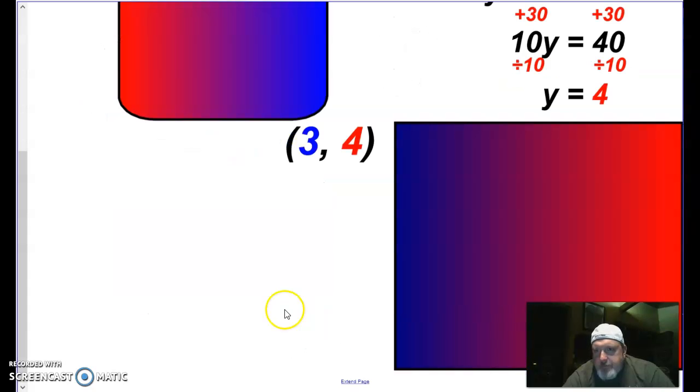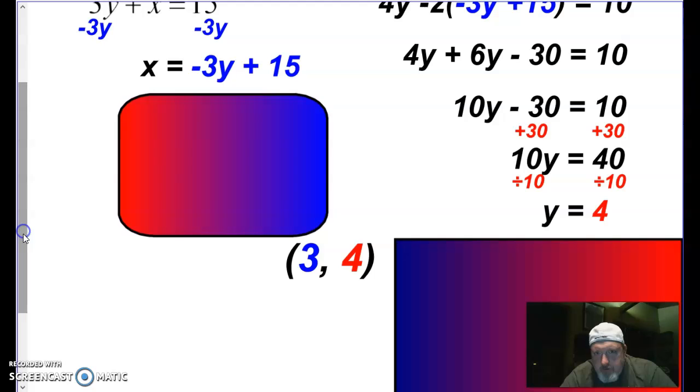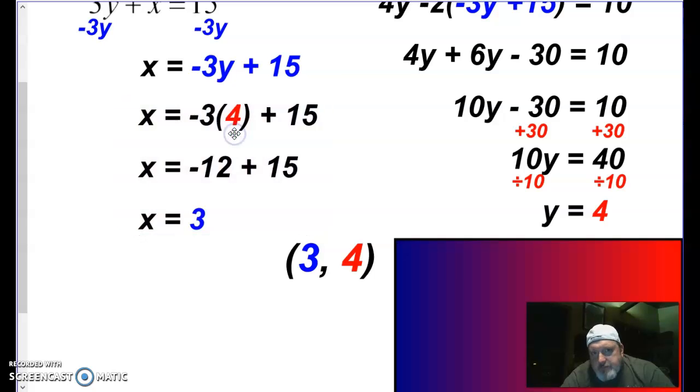Now that I know that y is 4, I am going to plug that back in to the other equation. So now that I have y equals 4, I'm going to plug that back in here and solve for x. So notice I replace this y with 4. Negative 3 times 4 is 12. And I can add these two together to get 3. And then my last step, since I have x and y, I am going to write them as an ordered pair.